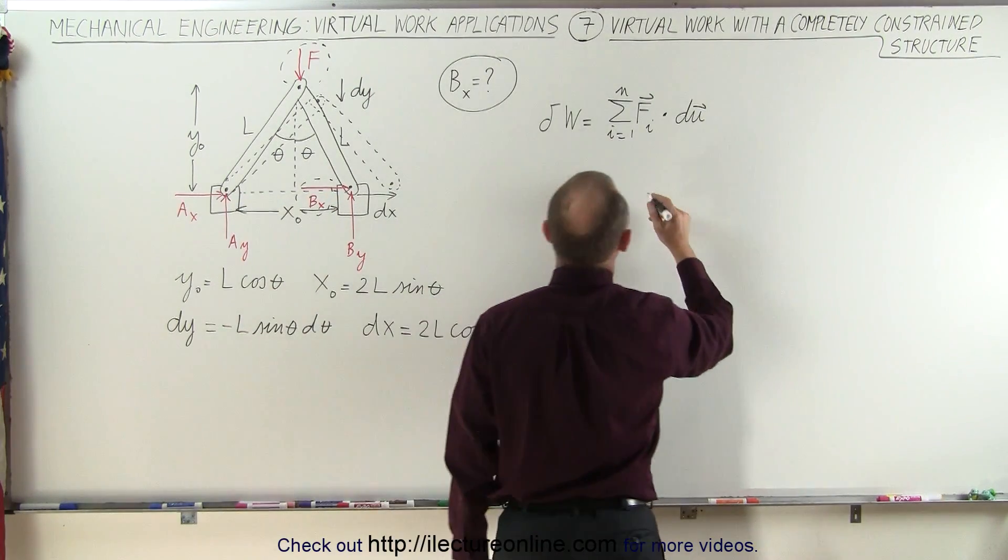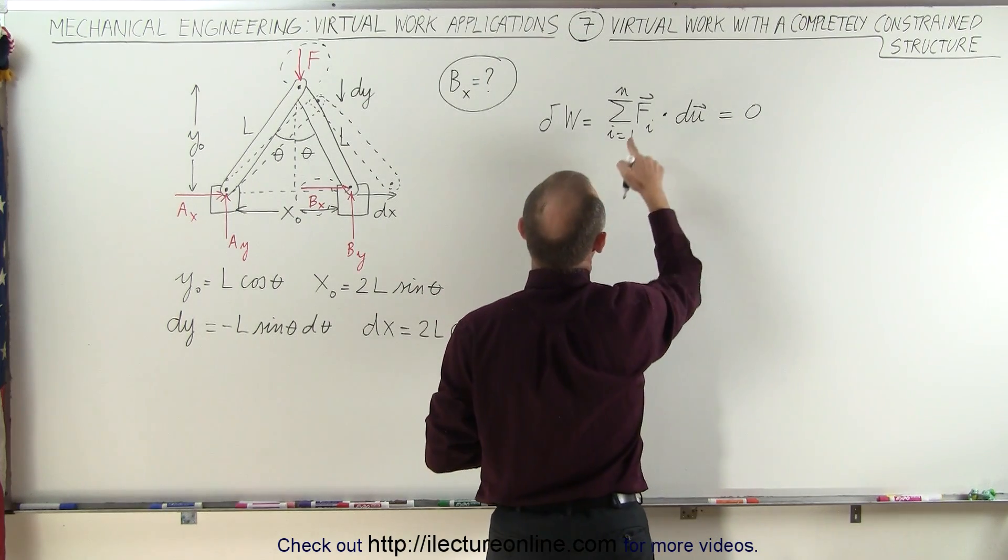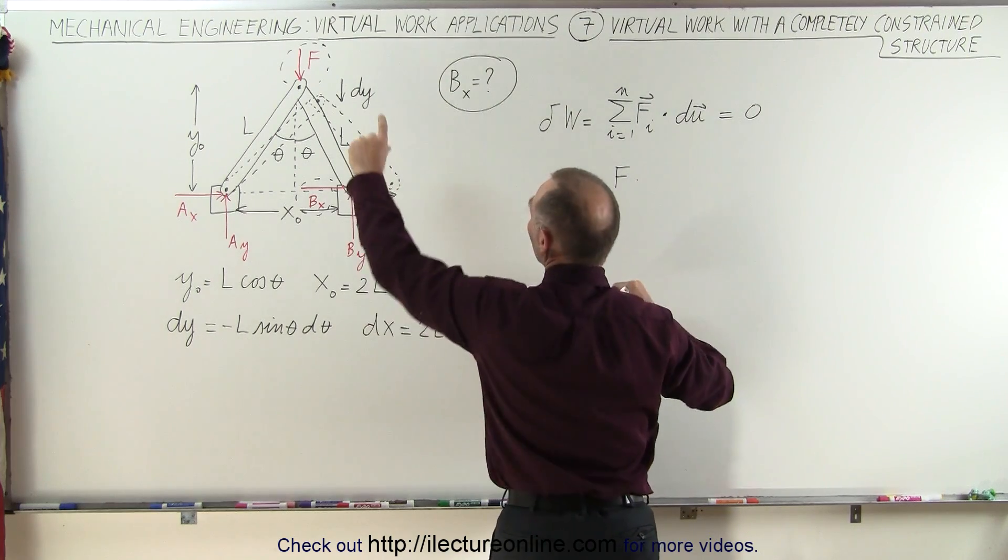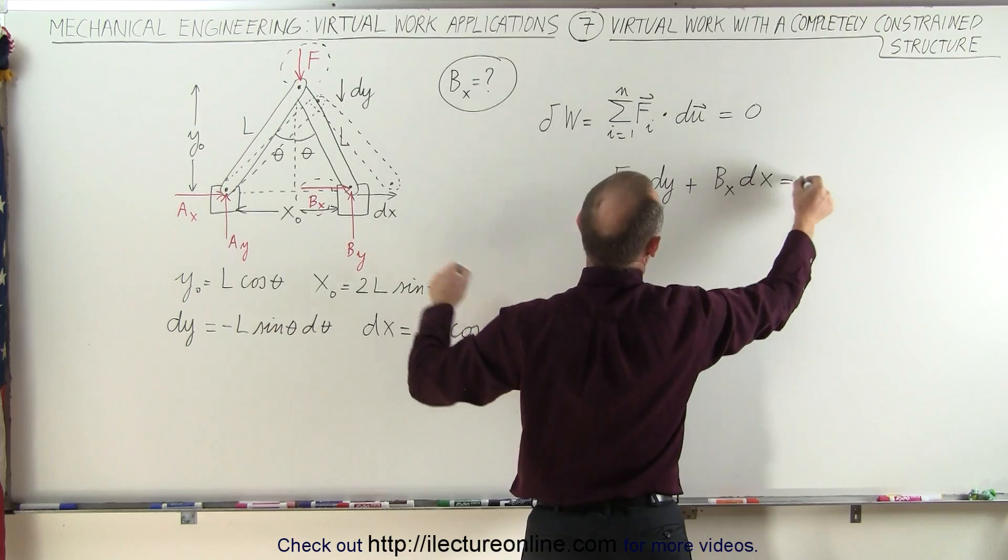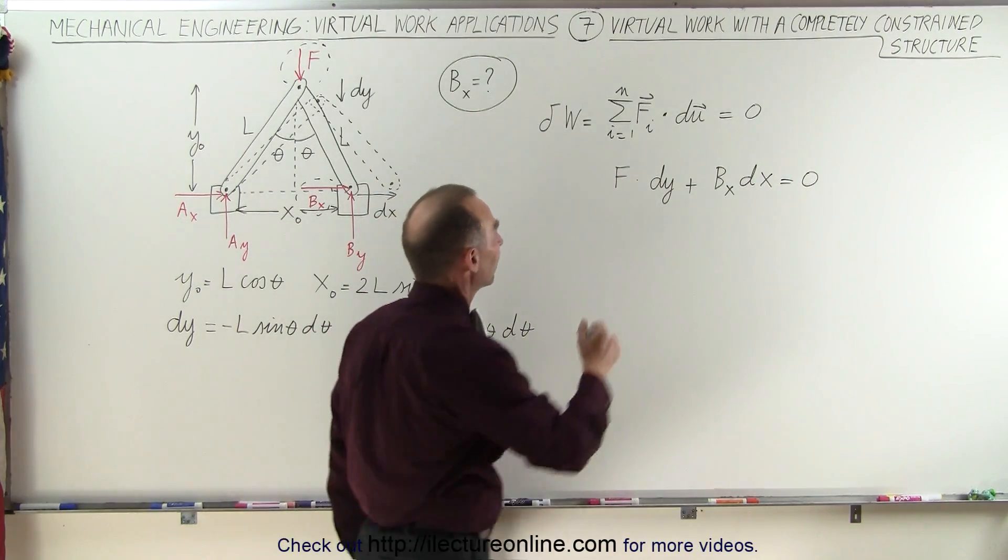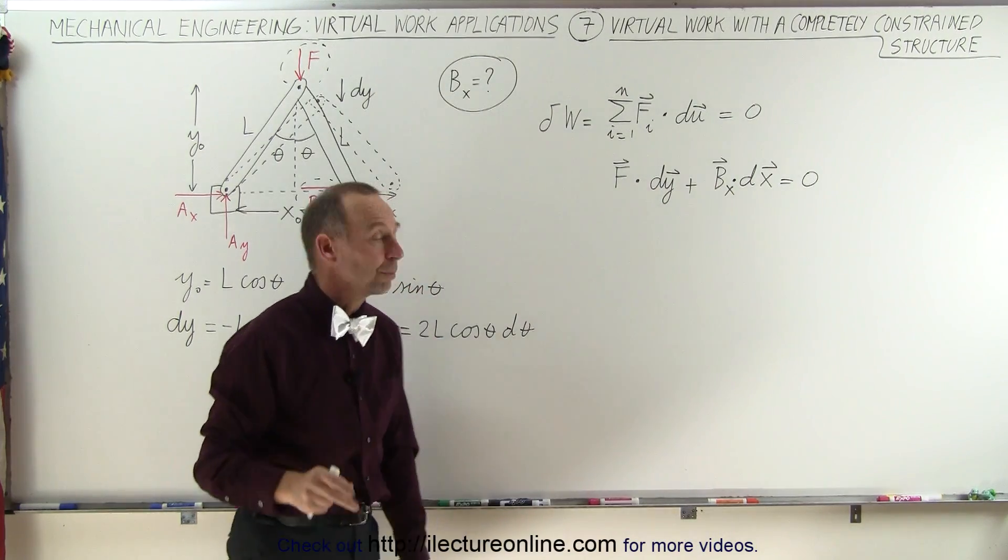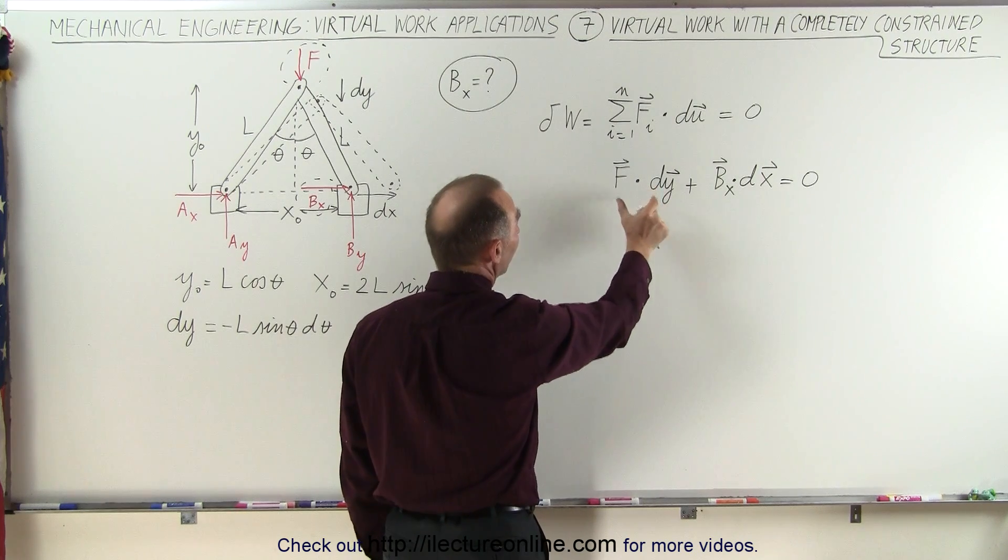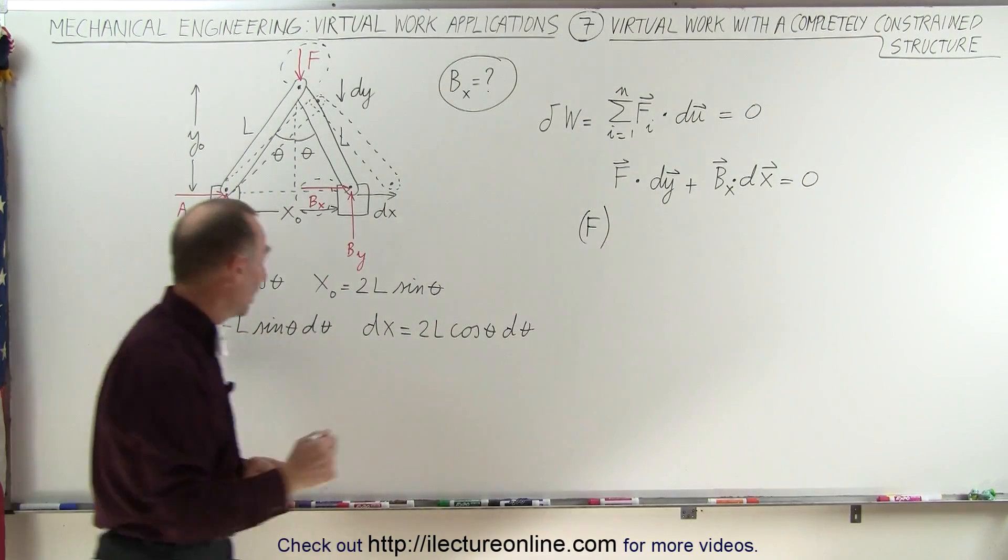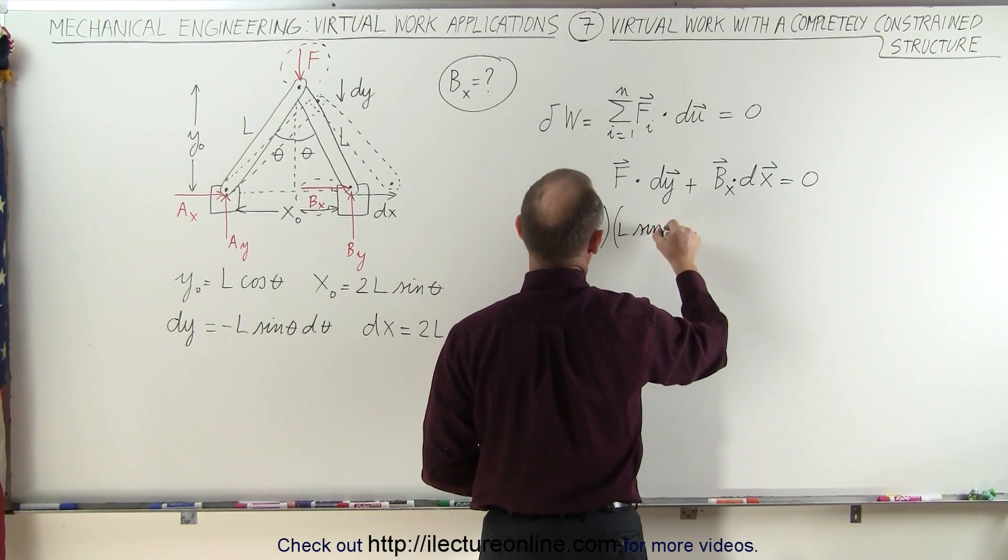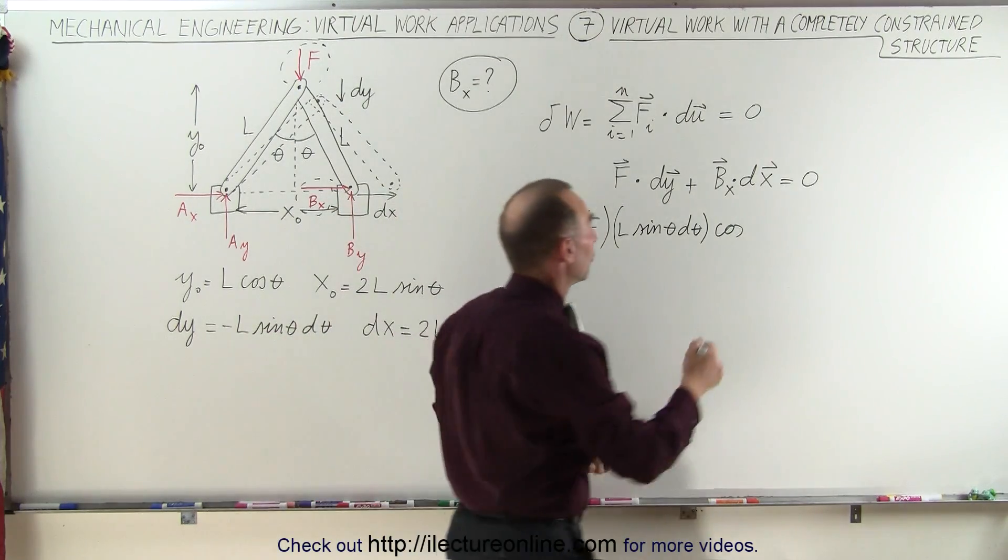Now we can say that this equals, and by the way, this must be equal to zero because the system is in equilibrium. So the first force F times the displacement dy, we have to be careful because we do have to take into account that these are vectors and we're doing the dot product. When you do a dot product, you take the magnitude of F times the magnitude of dy times the cosine of the angle between them. So we get F times dy, which becomes L times the sine of theta d theta times the cosine of the angle between the two, but since they're both acting downward, the angle between the two is zero, so we take the cosine of zero degrees.